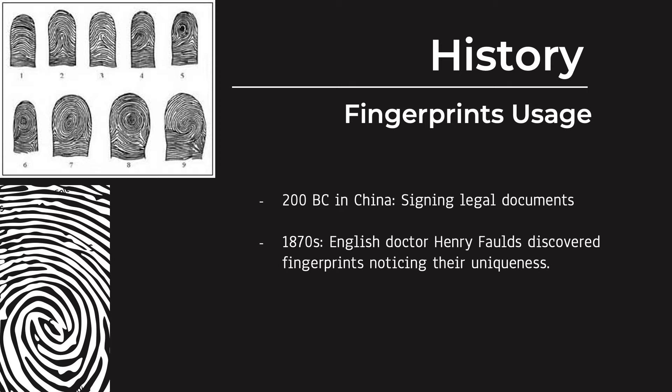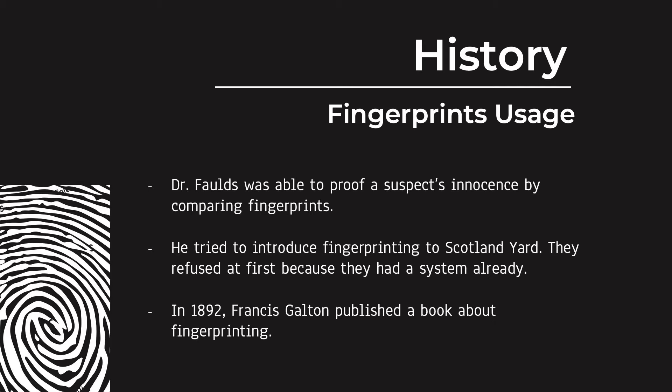They were using it for signing legal documents. Fast forward into the 1800s — in the 1870s, English doctor Henry Foulds discovered fingerprints when observant workers left prints in wet clay. He studied prints, noticing their uniqueness, which no one had noticed before. Later, Dr. Foulds was able to prove a suspect innocent by comparing their fingerprints to the crime scene. He tried to introduce fingerprinting to Scotland Yard, but they refused him at first because they already had a system.